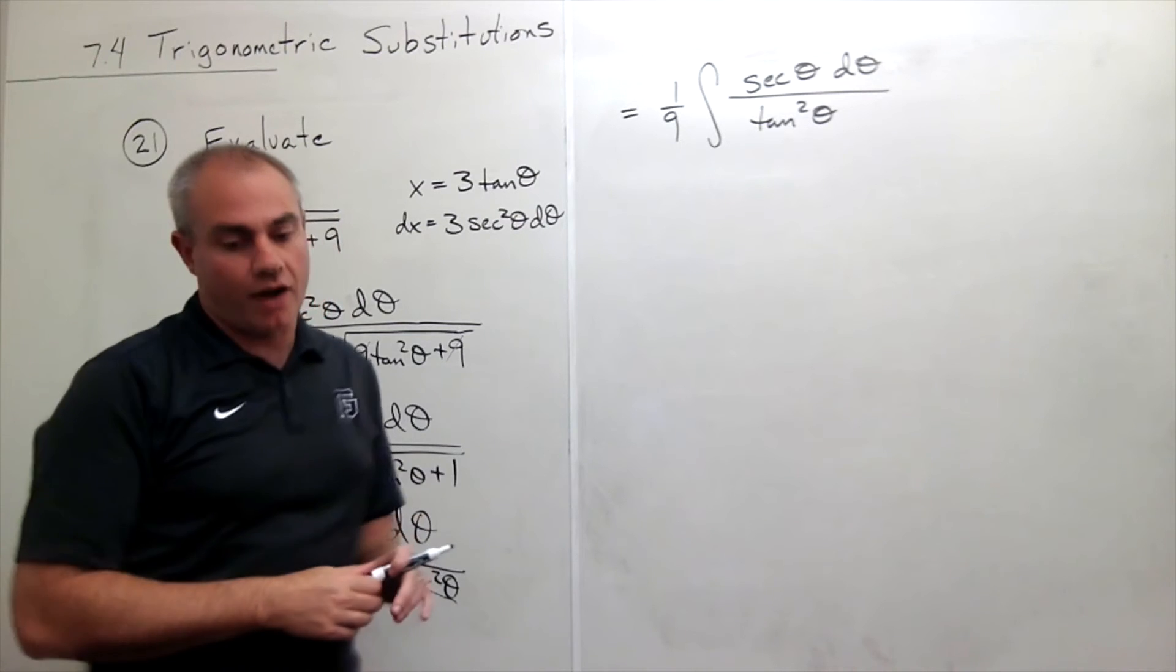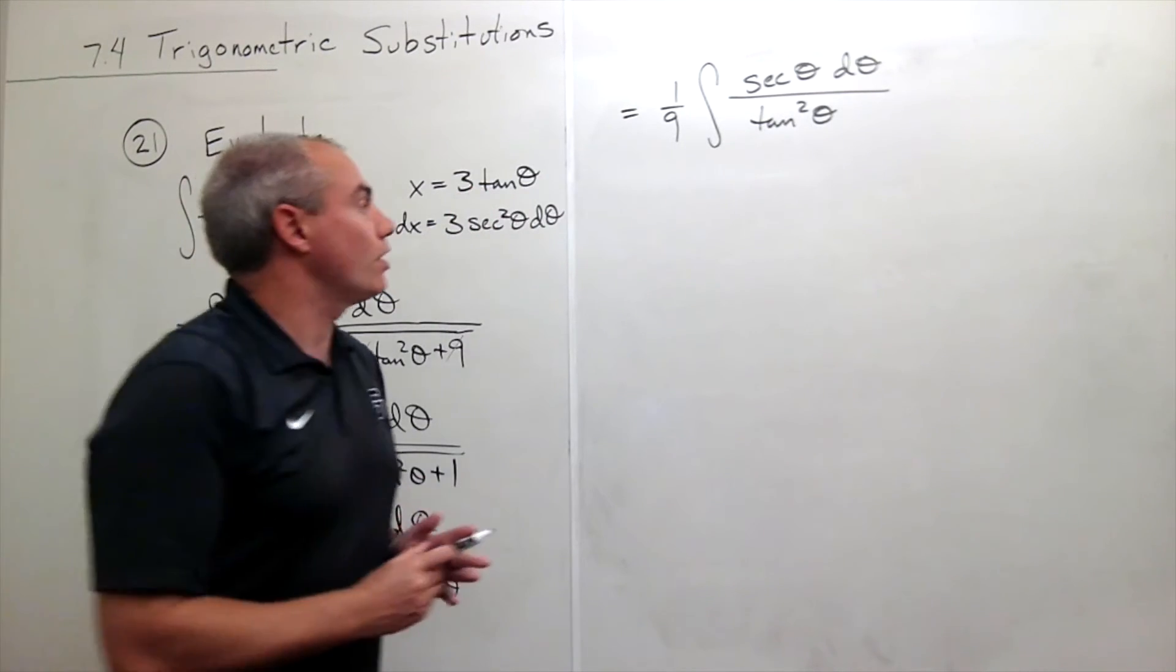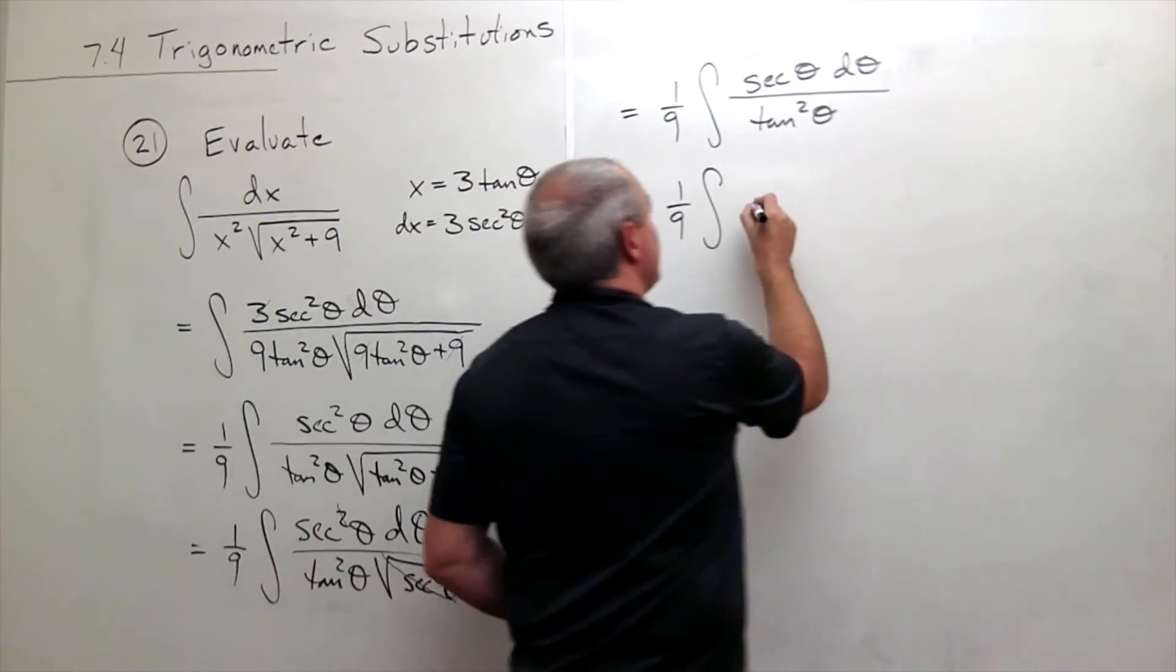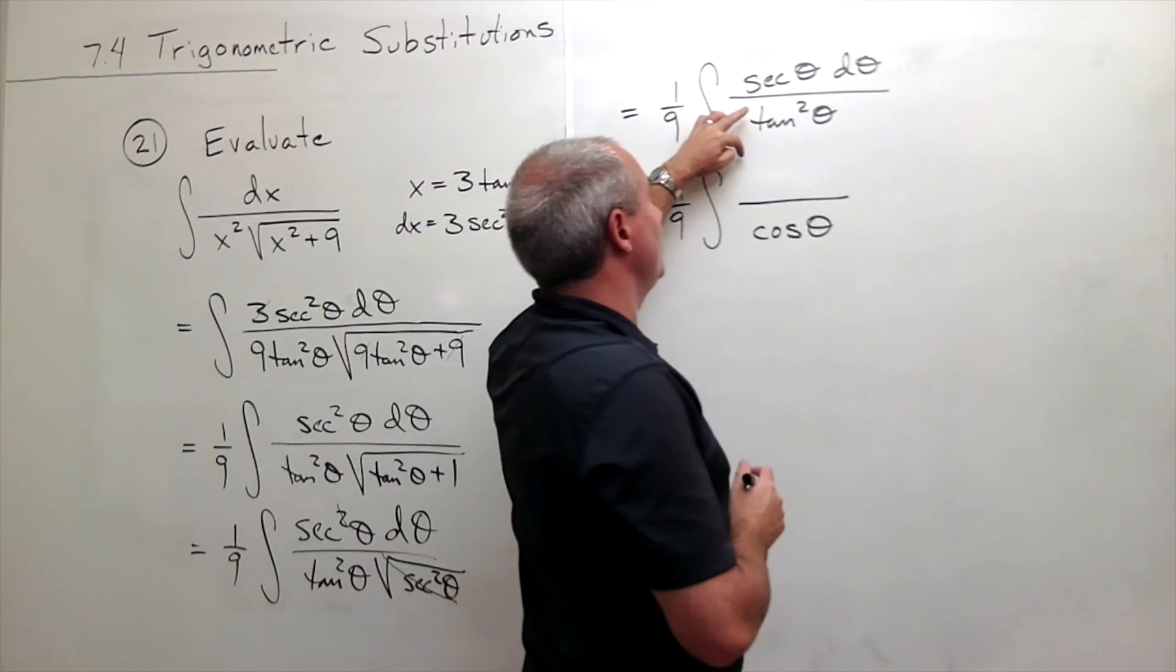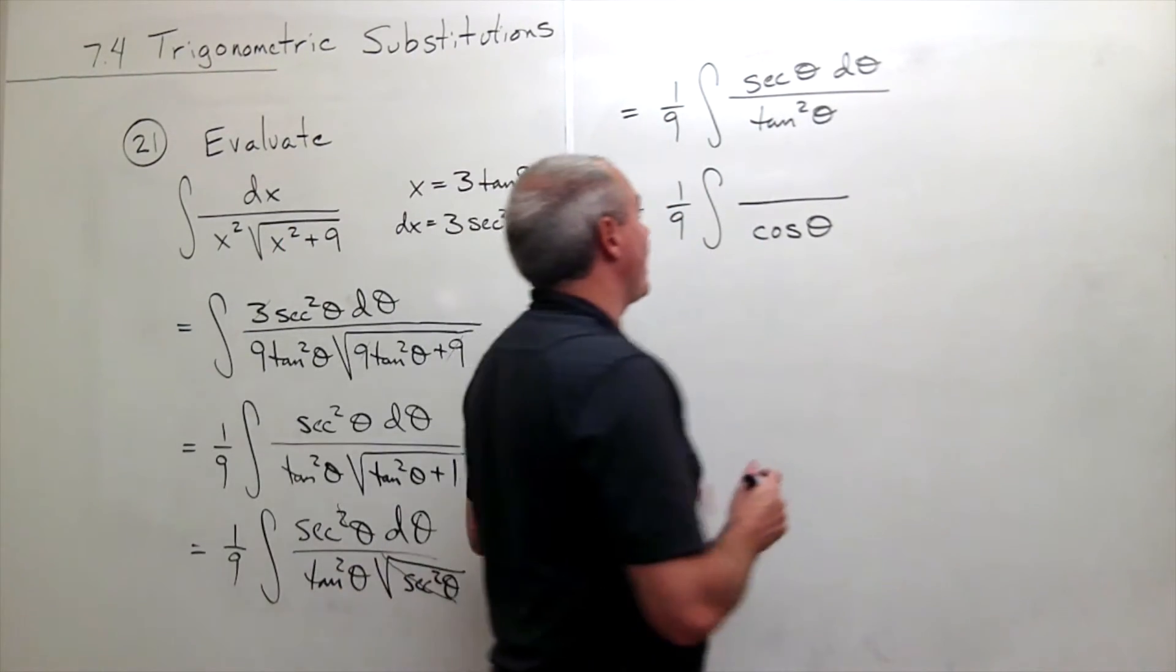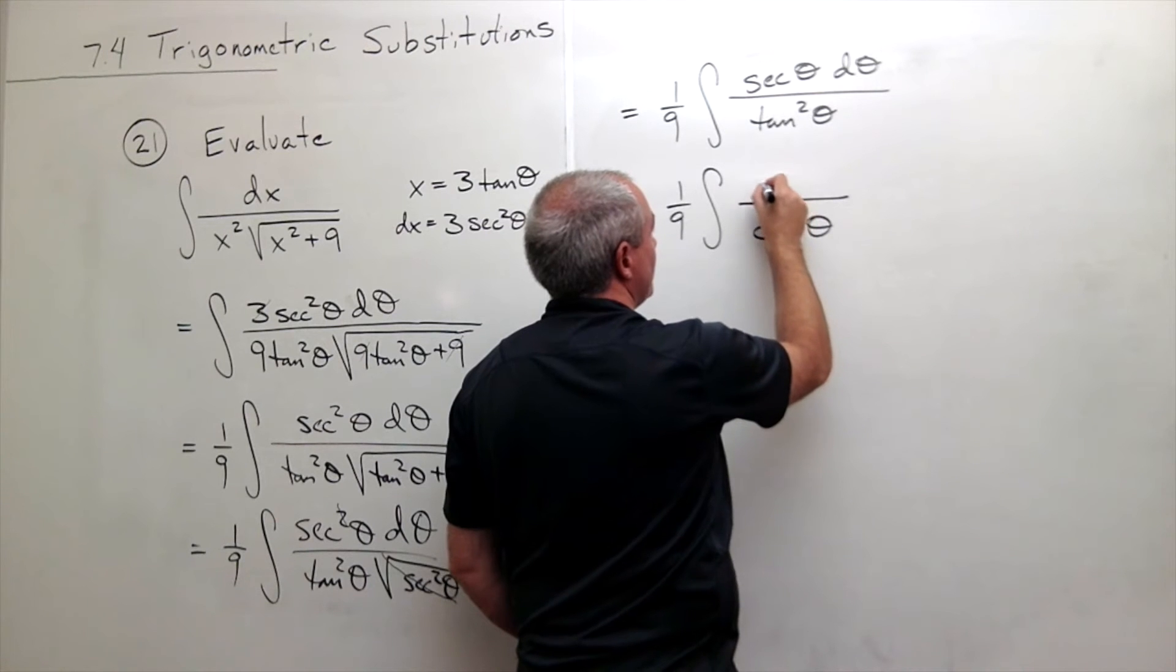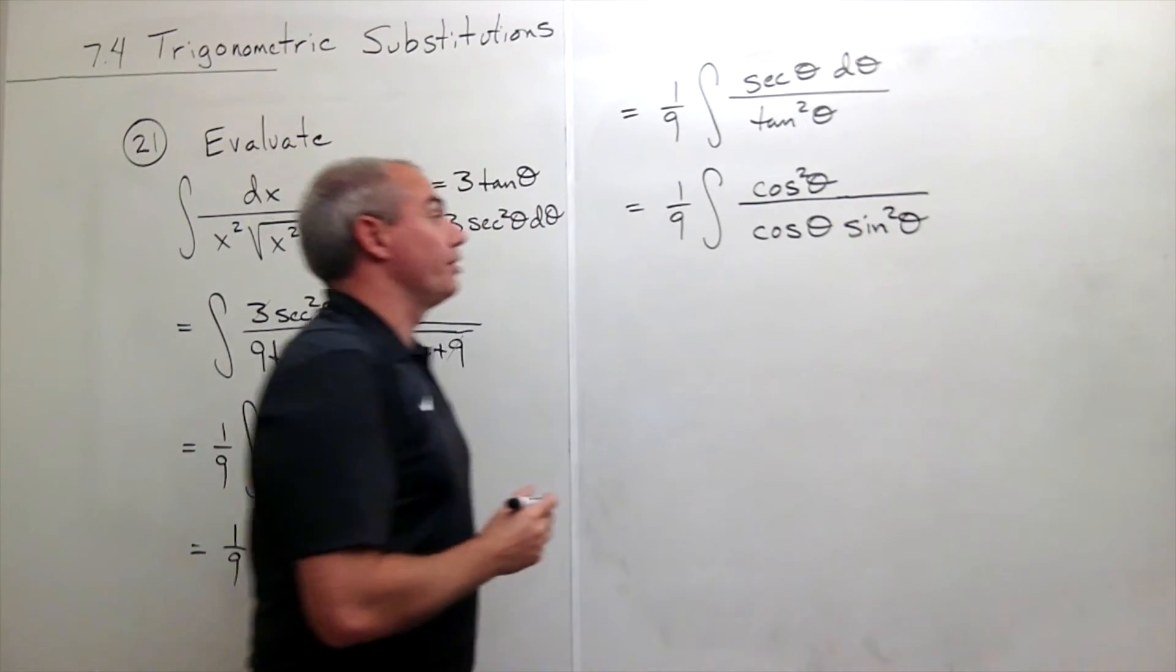So what I think I want to do now is let's rewrite this thing using sines and cosines instead of secants and tangents. A secant of theta is the same as a cosine of theta on the bottom. So on the bottom here I'm going to have a cosine of theta because of that secant theta on top. Tangent of theta is a sine over a cosine. But if I flip and multiply that, it's a cosine over a sine. So I have two cosines on top and two sines on the bottom. So I have a cosine squared theta on top and a sine squared theta on the bottom, d theta.